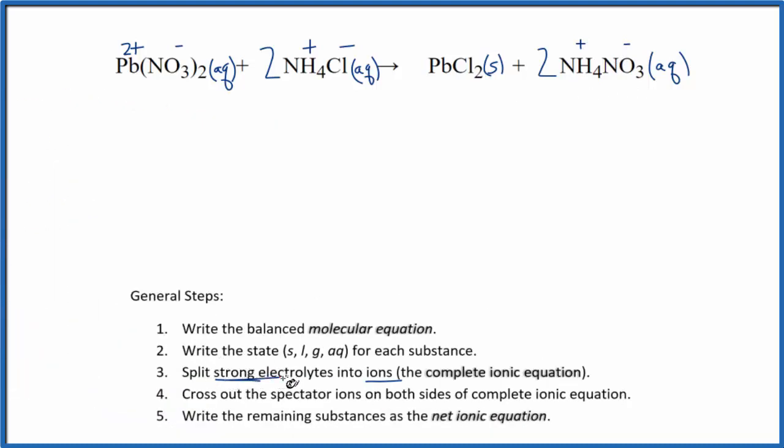Now we can split the strong electrolytes into its ions. These are the things with aqueous after it. So we have Pb 2+ and I'll write aqueous at the end. Plus NO3 minus, that's the nitrate ion. This 2 tells us we have two of them, so we need to put a coefficient of 2 in front.